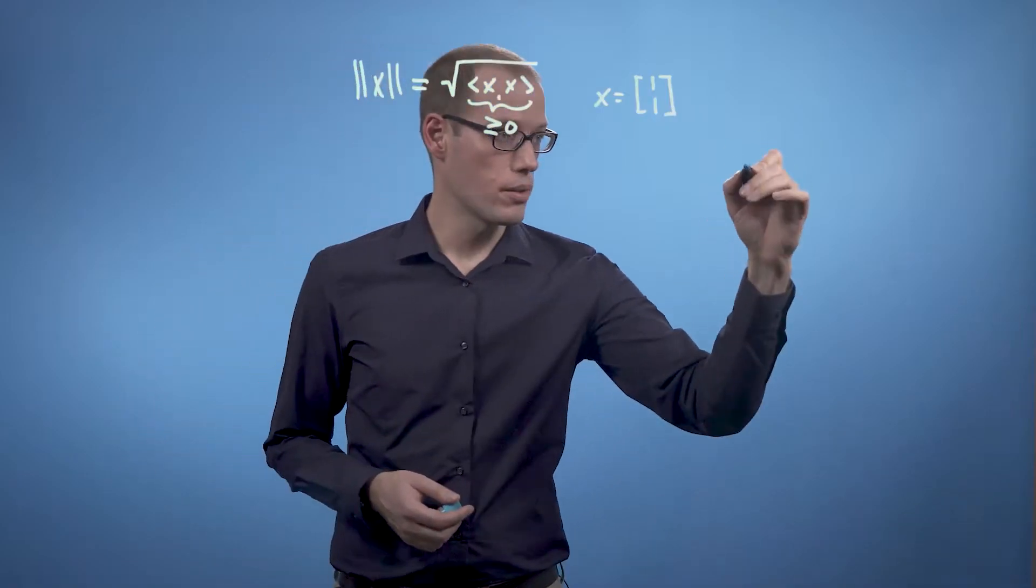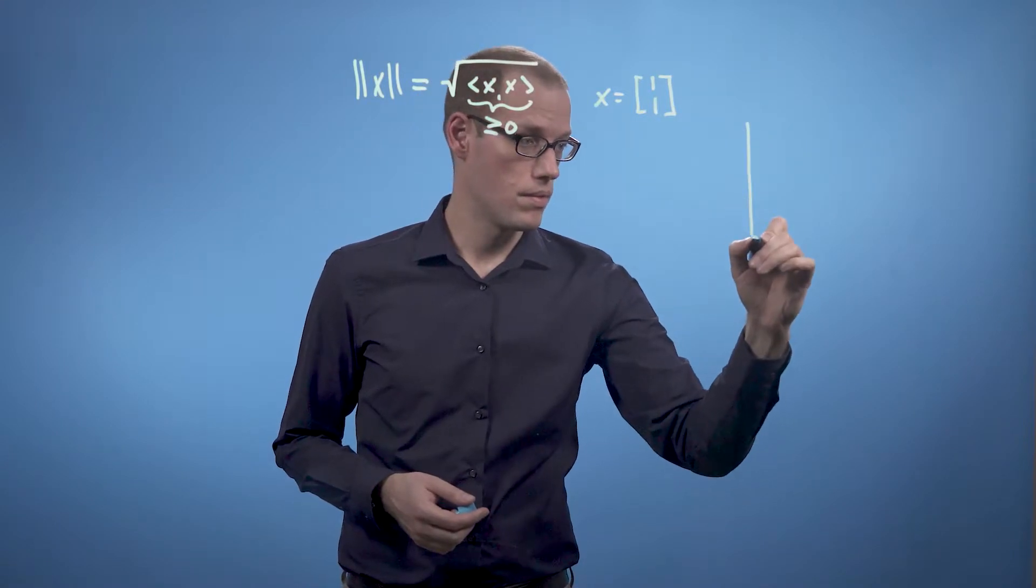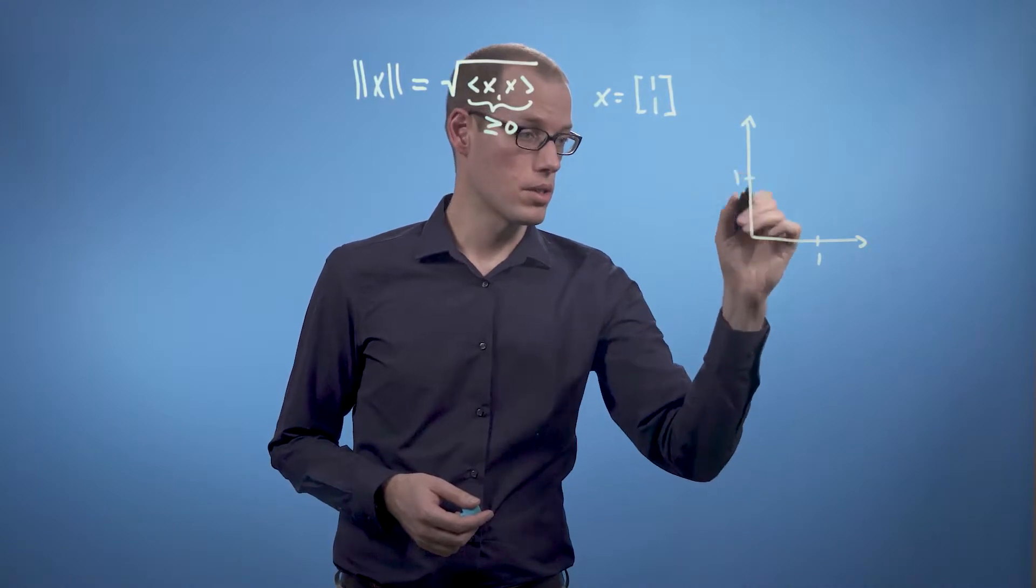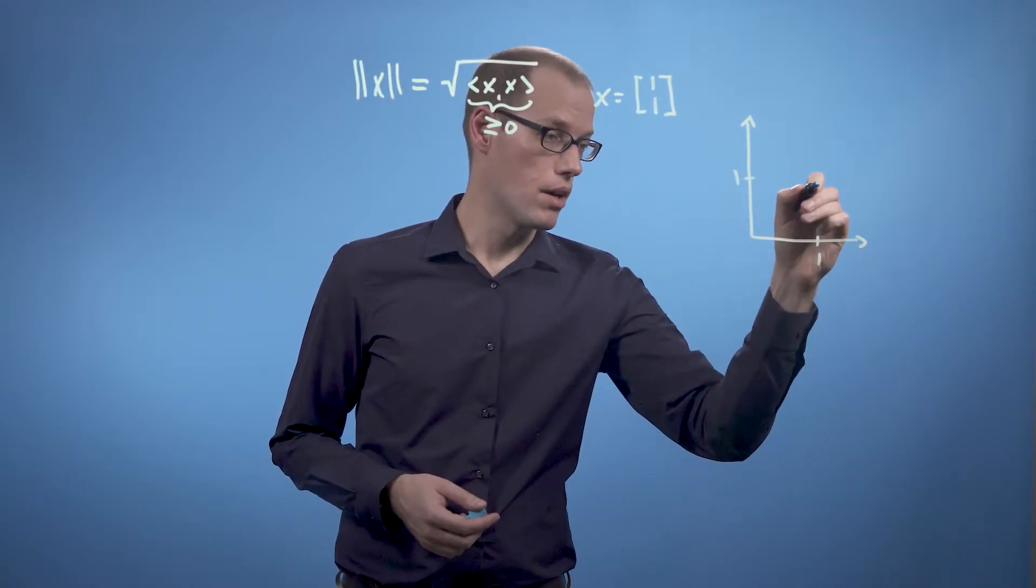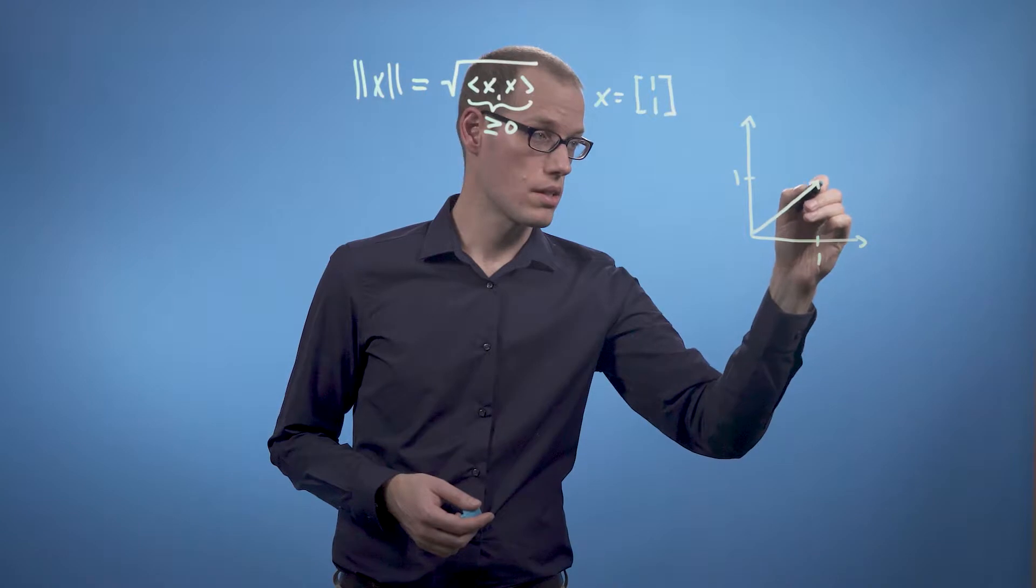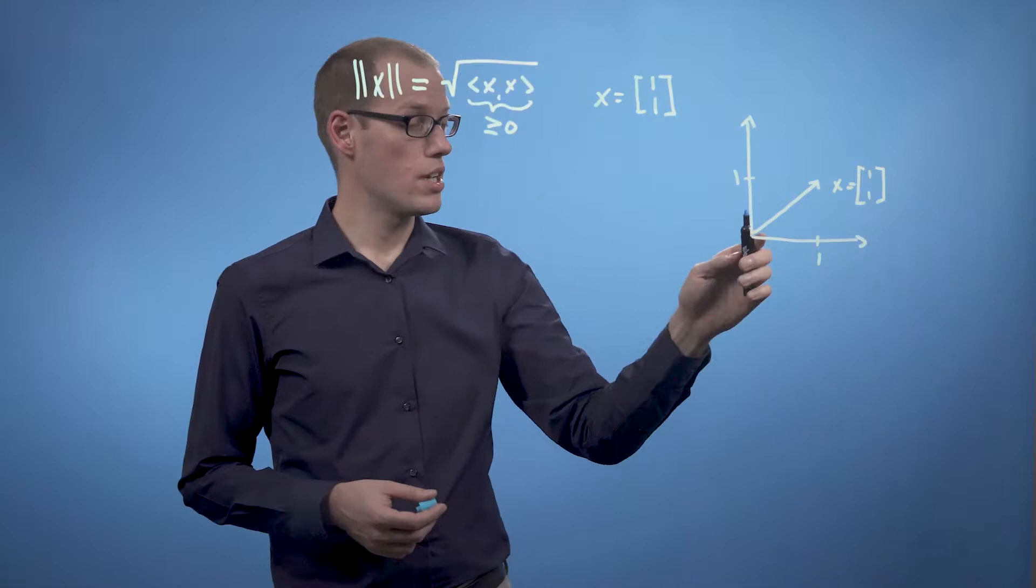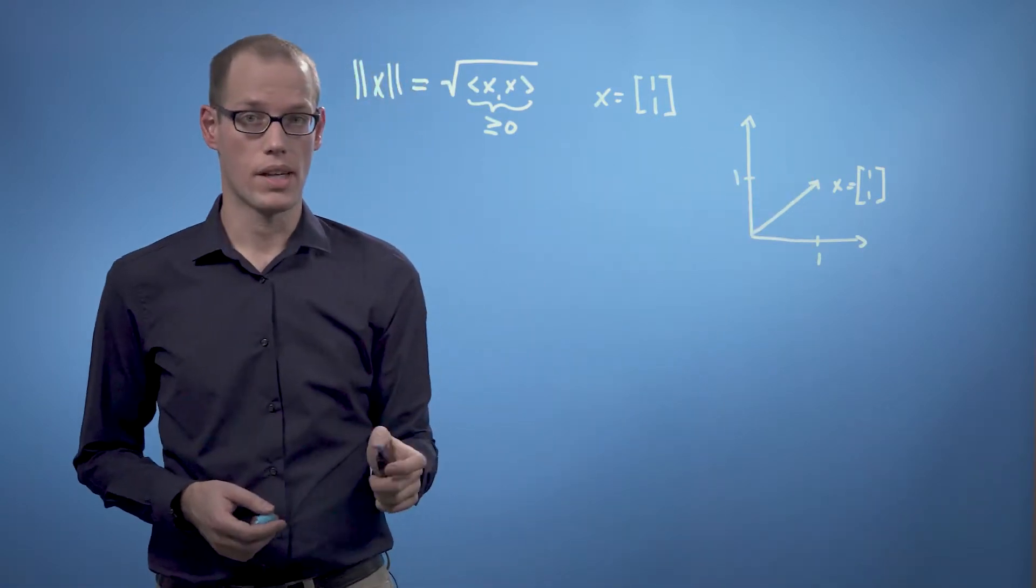So in a diagram, we have 1 here and approximately here. Then our vector x would be here, and now we are interested in computing the length of this vector.